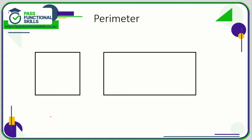Let's take a look at perimeter. First of all, what is perimeter? Perimeter is the distance around the edges of a shape, so it's all the side lengths added together.